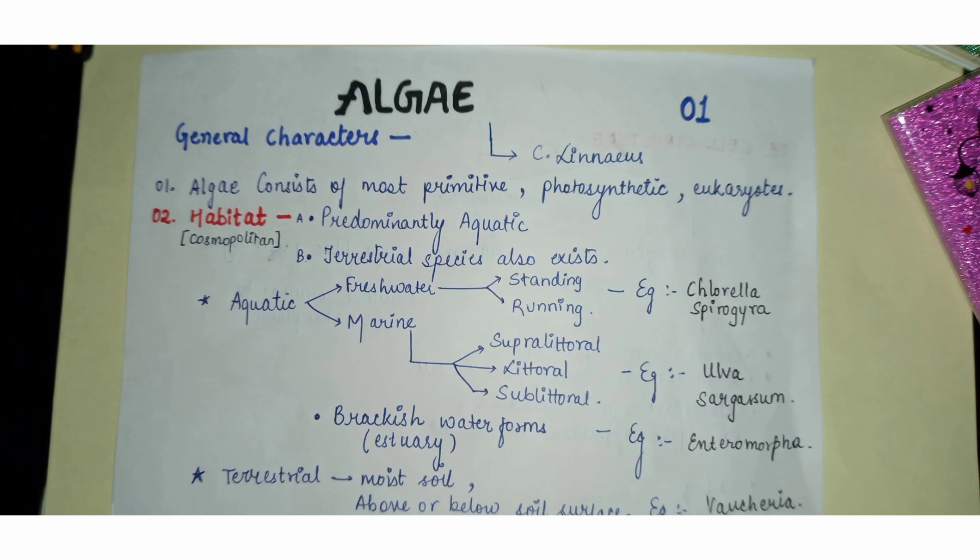Hello everyone, today we will be looking at the general characteristics of algae. Algae consist of primitive photosynthetic plants and are one among the first divisions of the plant kingdom. Our first consideration here will be habitat — habitat means where algae are actually found.